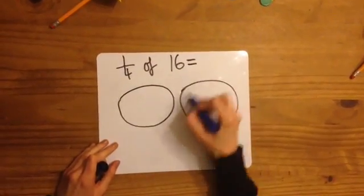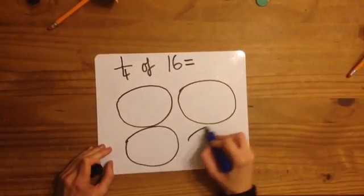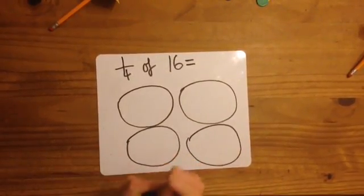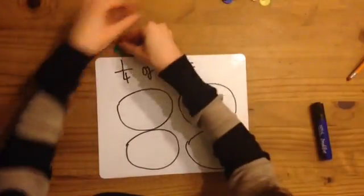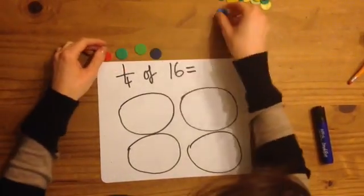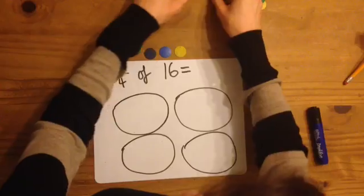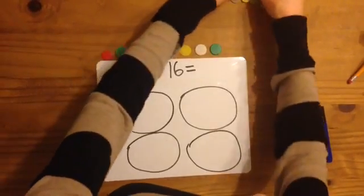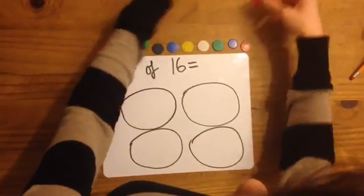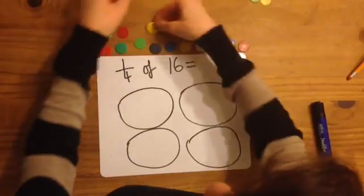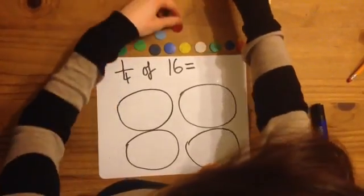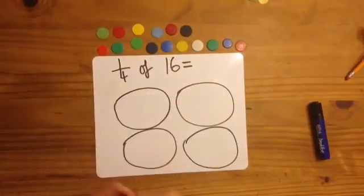So then we're going to get 1, 2, 3, 4, 5, 6, 7, 8, 9, 10, 11, 12, 13, 14, 15, 16 counters.